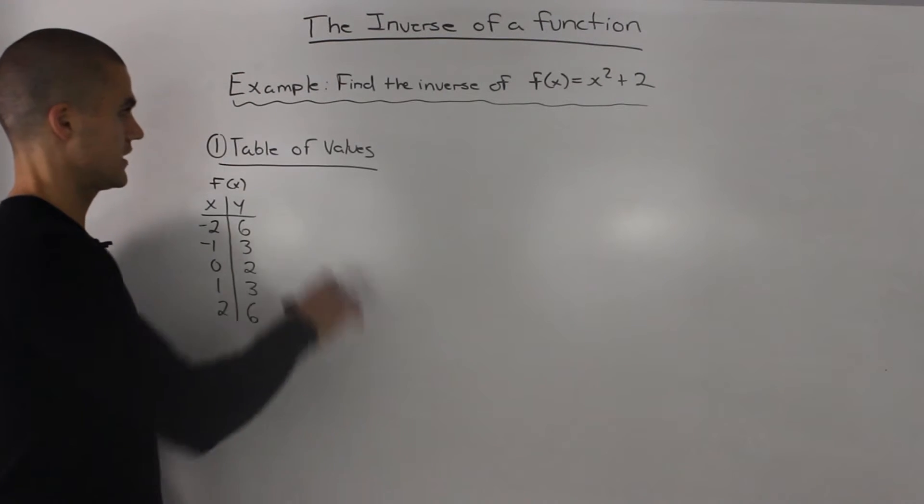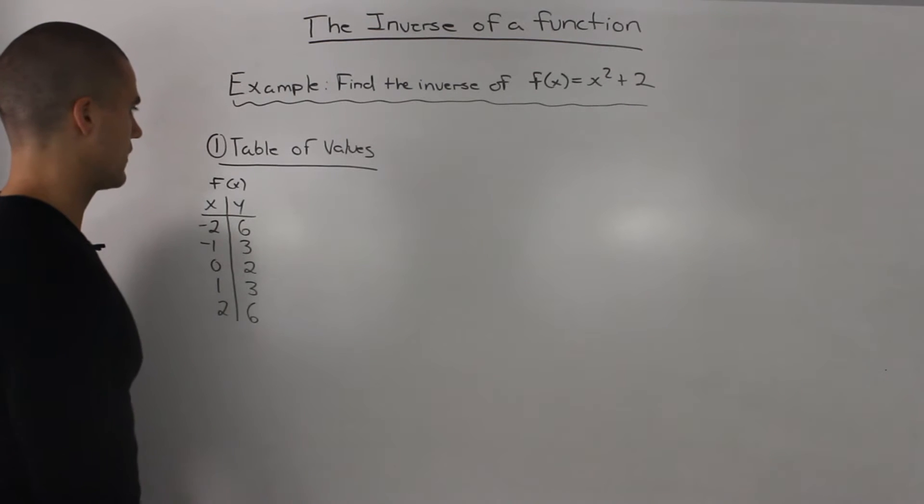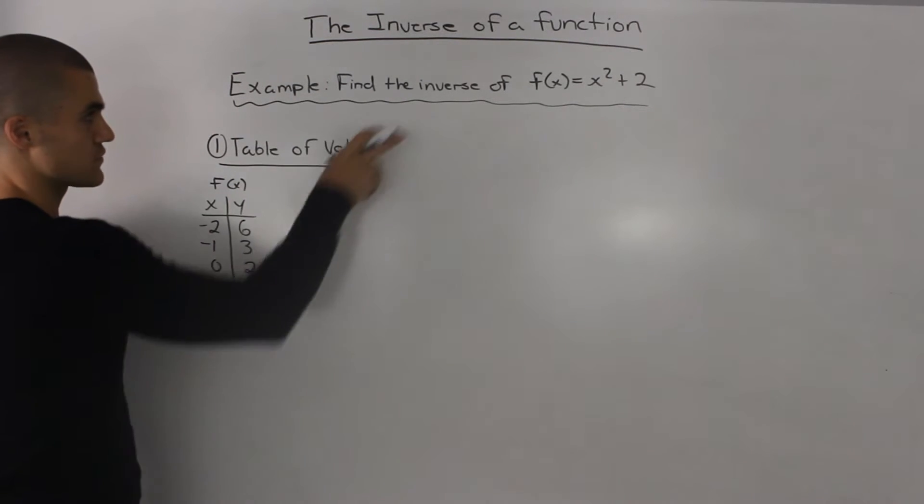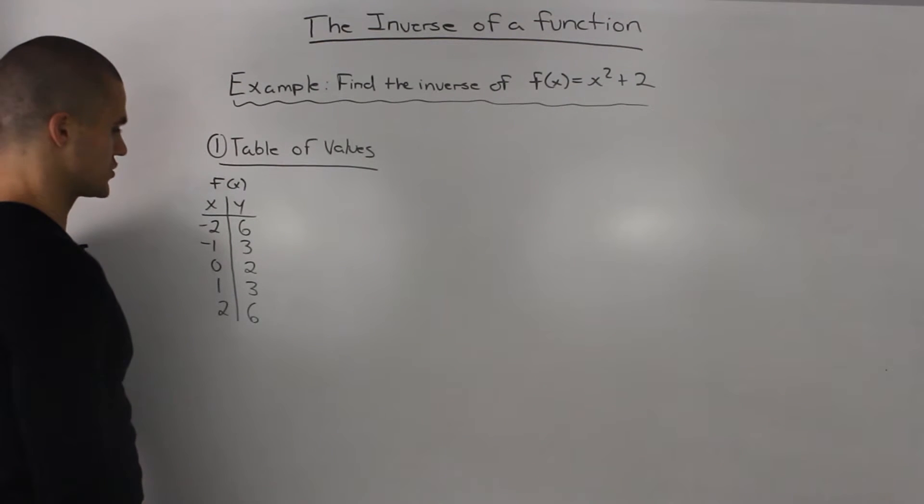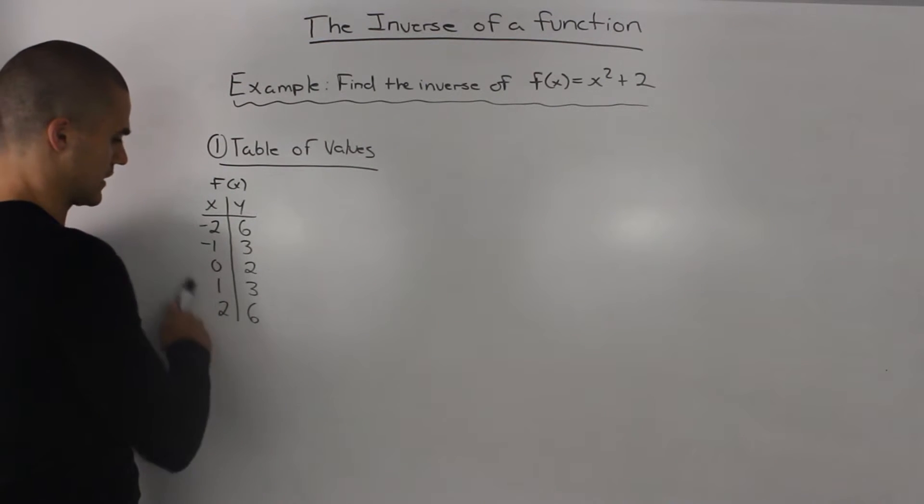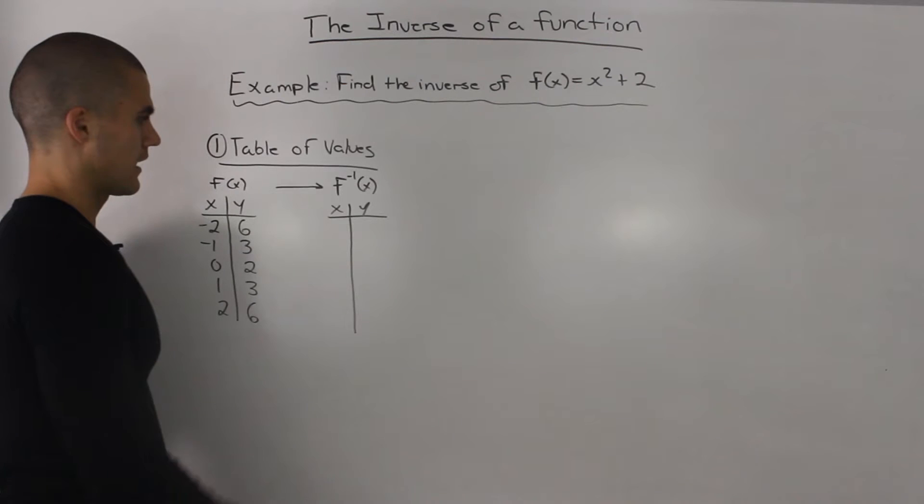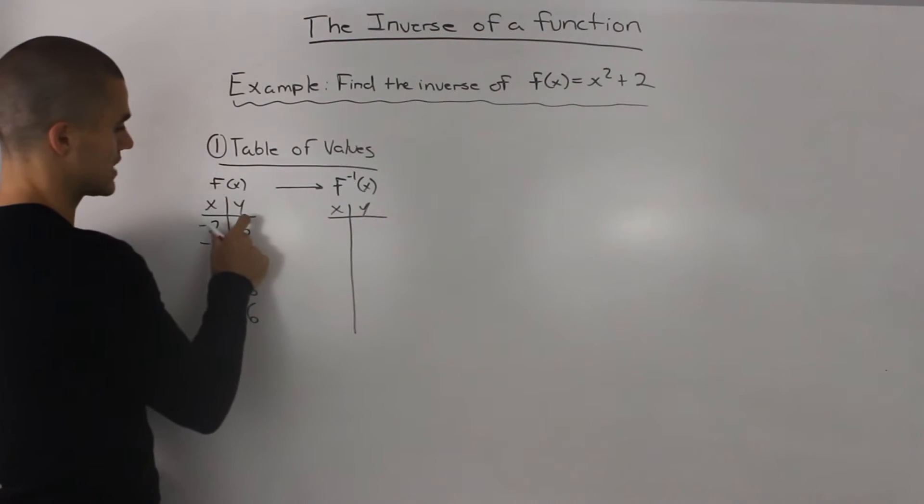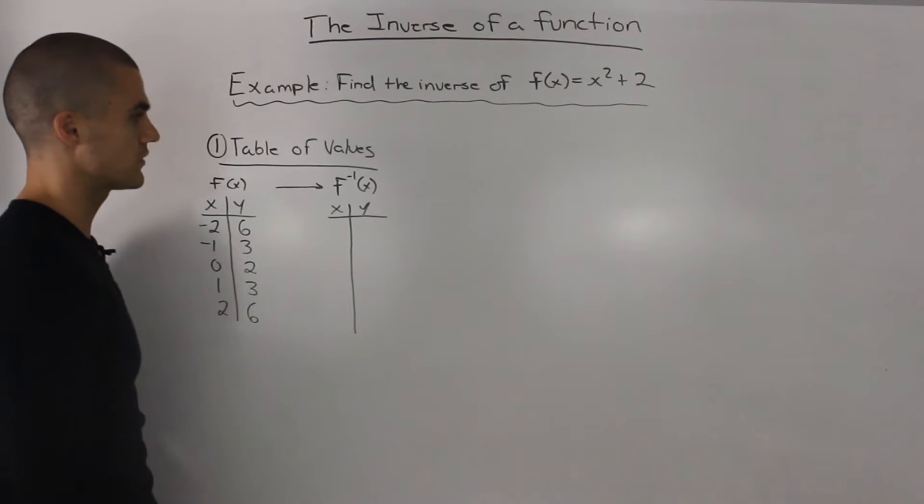The first way we can go about it is by making a table of values. I start off by making a table of values for our function x² + 2, and I use x values from -2 to positive 2. Then all you do when you're making the table of values for the inverse of the function is you just switch the x and y values.